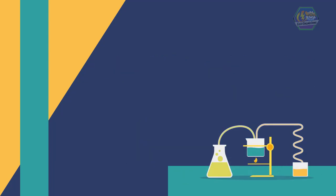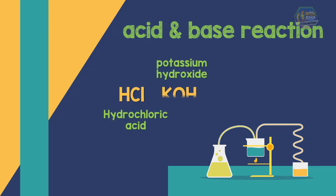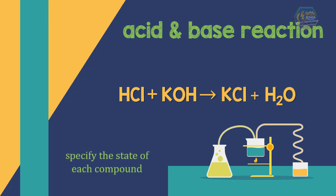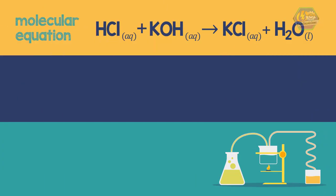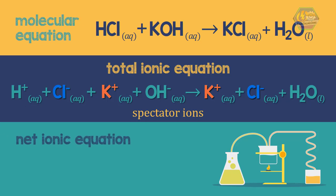Let us try writing equations for acid and base reactions. When we mix hydrochloric acid and potassium hydroxide, we write the molecular equation. We specify the state of each compound — potassium chloride is soluble in water so it is aqueous, and water is always liquid. The total ionic equation is then written. Since potassium and chloride ions appear on both sides of the equation, they are the spectator ions, and the net ionic equation follows.